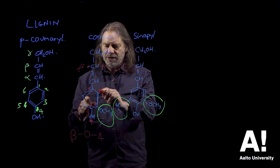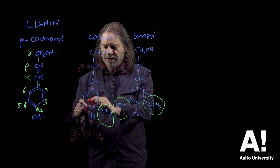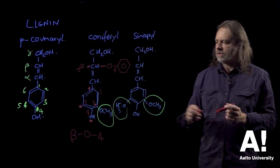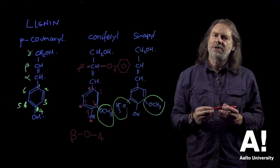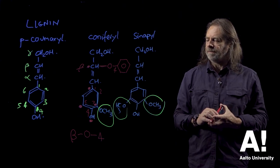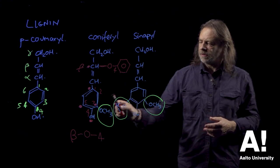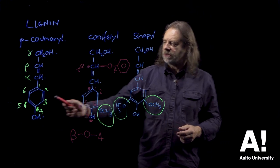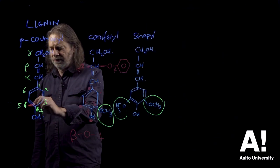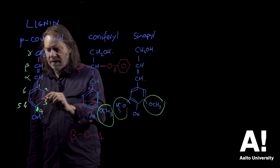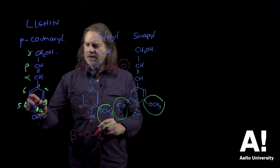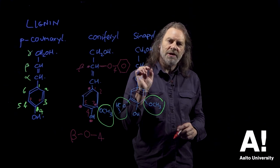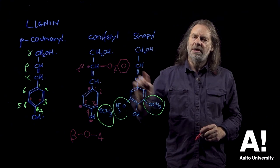We can also get bonds at the three and the five positions. But of course, the three and the five position there has got these substituents on it, so that can't bond. The three position there can't bond because of that substituent. Whereas here, the three and the five are open. So this type of structure can have more crosslinks than that type of structure, and that is somewhere in between.